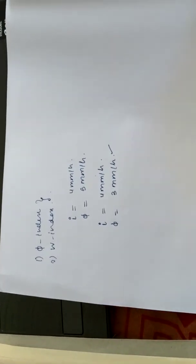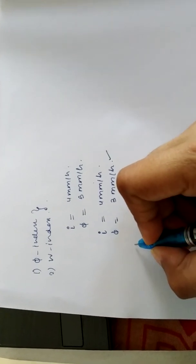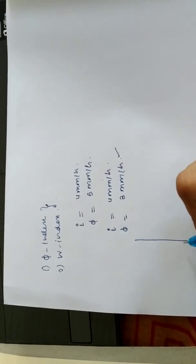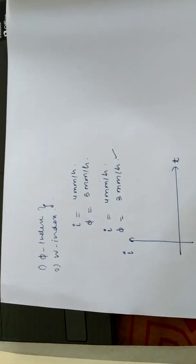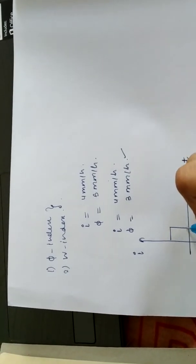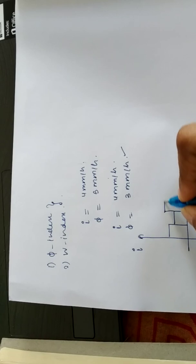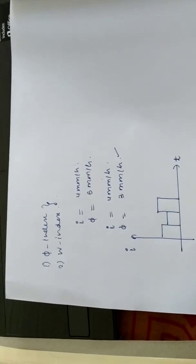Here we can understand this better with the help of hydrograph which is nothing but intensity of rainfall versus time. We have a hydrograph something like this. Say for 3 hours, we have a hydrograph of different different intensities.